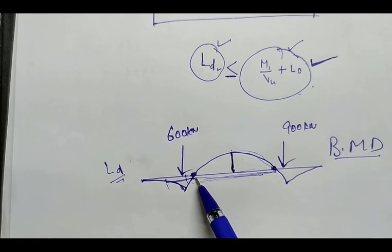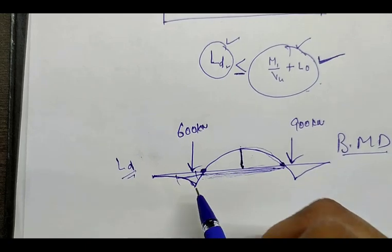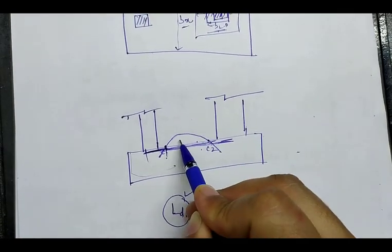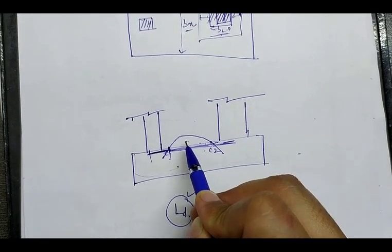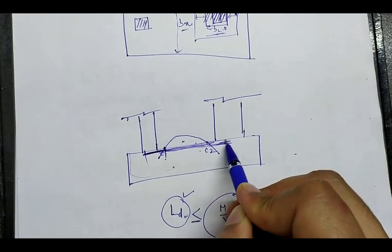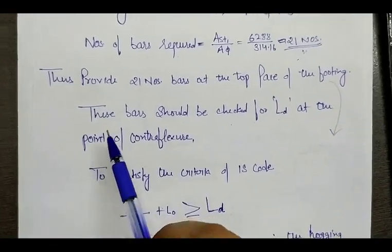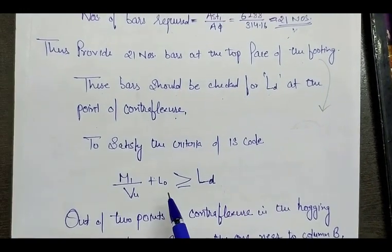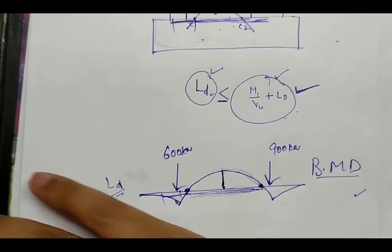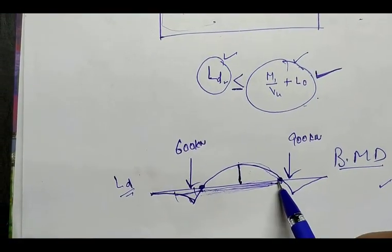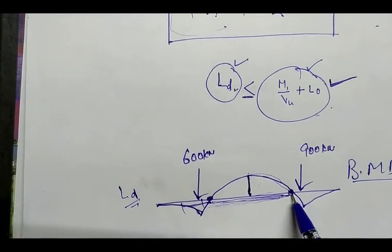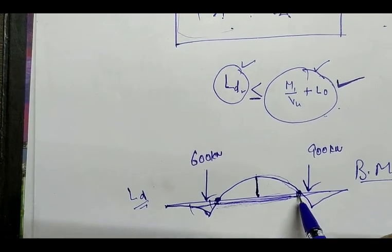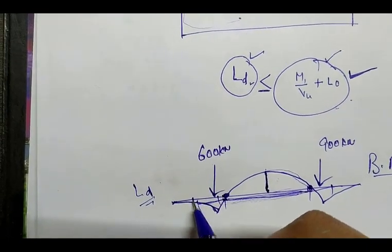Bars are provided at the top face of the footing because the hogging bending moment is maximum there. Looking at the footing diagram, the bending moment diagram shows the hogging shape. To resist this bending moment, we provide steel at the top face. These bars should also be checked for development length at the point of contraflexure. At those two points of contraflexure, shear force is maximum and bending moment is zero.